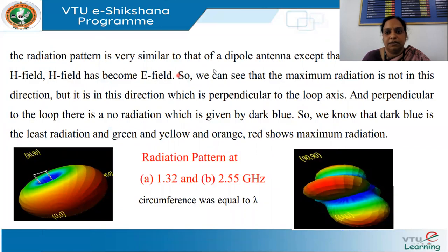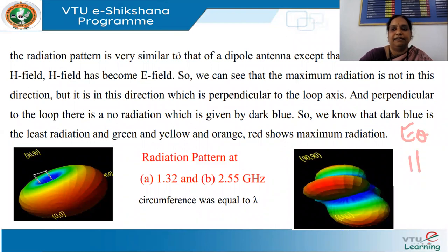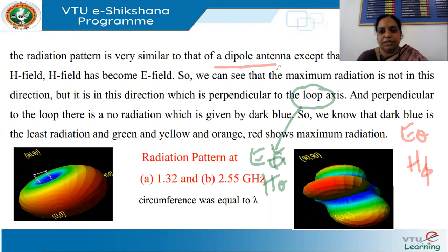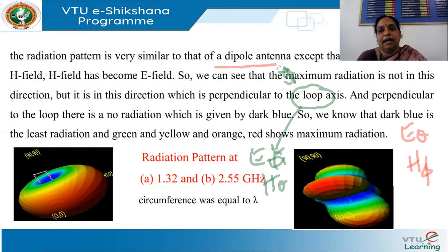The radiation pattern of a loop antenna is similar to that of a dipole antenna. However, for a dipole antenna the fields are E_θ and H_φ, whereas for a loop antenna these are interchanged: the loop antenna gives E_φ and H_θ. So the electric and magnetic field components are just swapped between the small loop antenna and the linear dipole antenna.